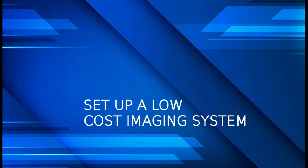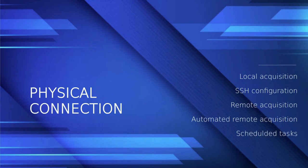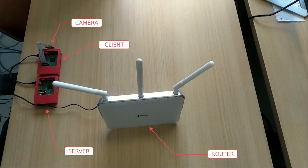Let's go for the presentation which deals with setting up a low-cost imaging system. Here we will use Raspberry Pis and one router. The goal is to get images by launching a command from the server to the client, using the camera which is connected directly to the client, and using the router to connect the server and the client between them.